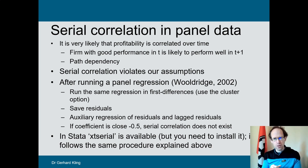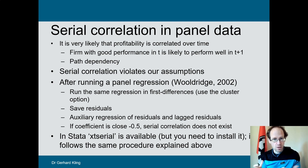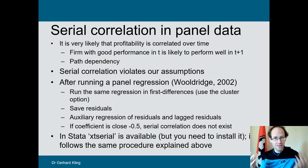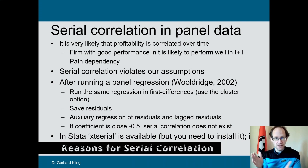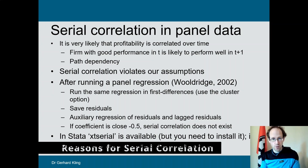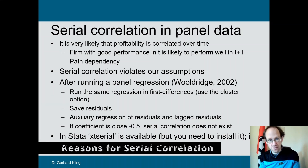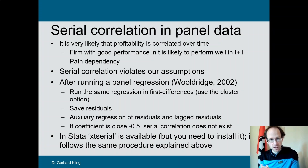What is the problem? Based on our assumptions we would expect that the error term in our panel data model is IID distributed, which means identically independently distributed. So put differently, there is no relationship between the past error term and the current error term. This independence is very often violated, particularly when we work with firm-level data, where it is quite likely that there are some hidden factors that might drive a certain outcome.